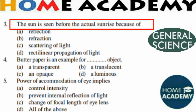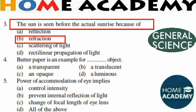Question number 3: The sun is seen before the actual sunrise because of which phenomenon? The sun is visible about 2 minutes before the actual sunrise and 2 minutes after the actual sunset. This is because of atmospheric refraction. The twinkling of stars is also related to this phenomenon.